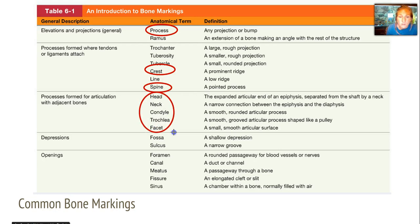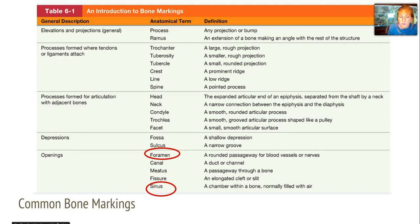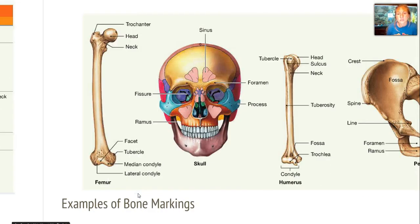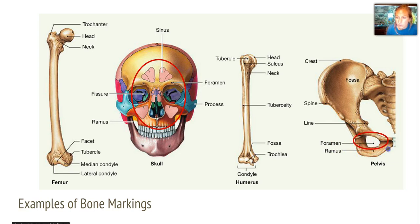There are several common markings found in long bones that help us move. You also have depressions and openings. You'll probably most commonly see foramina, which look like a large hole and are really a passageway for blood vessels or nerves. You have sinuses, which are chambers within a bone normally filled with air — and there are lots of them in the face. Take a look at this diagram that points out many of them visually; maybe even draw yourself a quick sketch. Here are those sinuses of the face — you can see there are quite a few. Here is a foramen, a large hole, and here's that crest of the pelvic girdle, that ridge.